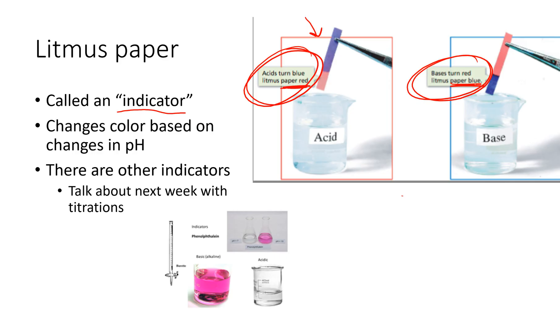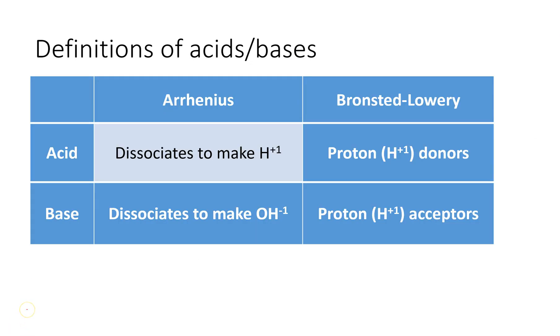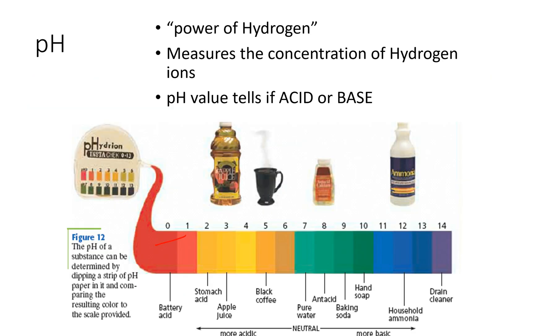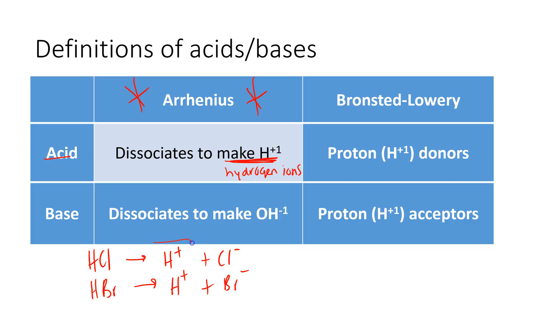Next up, definitions of acids and bases. So there's a couple different theories associated with acids and bases. Arrhenius is going to be the one that we spend the most time thinking about. So Arrhenius says that acids dissociate to make hydrogen ions, H+. So common acids are going to be HCl. When that breaks apart, we're going to have hydrogen and chlorine. We could have hydrobromic acid. When it breaks apart, we have hydrogen and we have bromine. So anytime hydrogen ions are dissociated, then that means the substance is acidic.